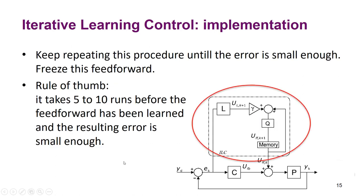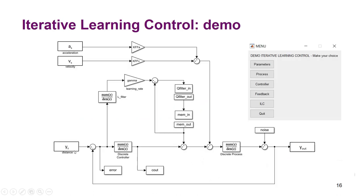We keep repeating this until the error is small enough, then freeze the feedforward contribution — otherwise the ILC loop may react to noise always present in the error signal. As a rule of thumb, with a learning rate of 0.5, it takes about 5 to 10 runs before the feedforward is learned and the error is small enough. I will demonstrate this in the next video — thank you for watching, see you then.